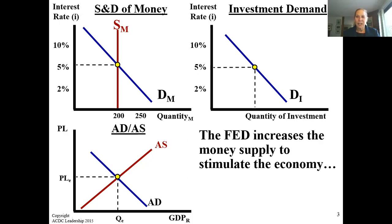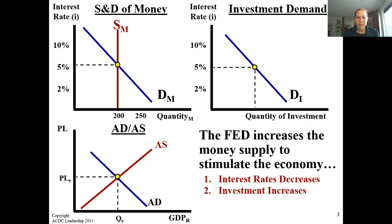The Fed increases the money supply to stimulate the economy. First, interest rates decrease. Investment increases. And aggregate demand, GDP, and price level increase. Let's see how that works graphically.